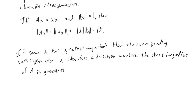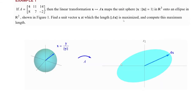Now we'll look at example one that exemplifies what I've laid out. We're given a matrix, and the linear transformation x to Ax maps the unit sphere — the set of all x such that the length of x equals one in R³ — onto an ellipse in R². We start with our unit sphere, and any vector multiplied by A gets mapped onto this slanty ellipse. Our goal is to find a unit vector x at which the length of Ax is maximized, and then compute that length.